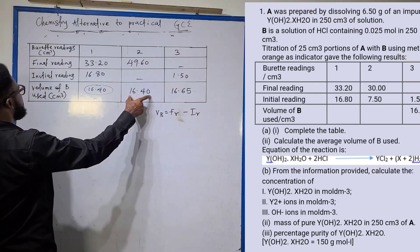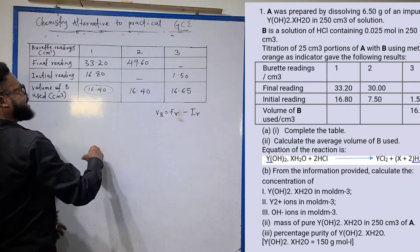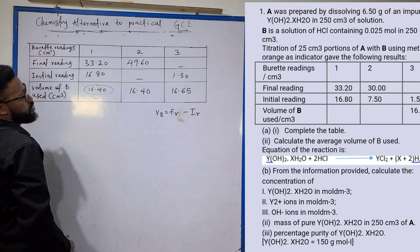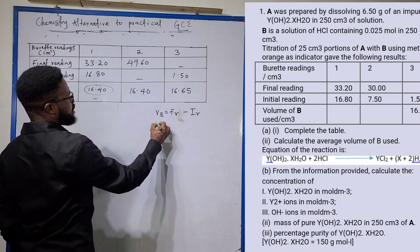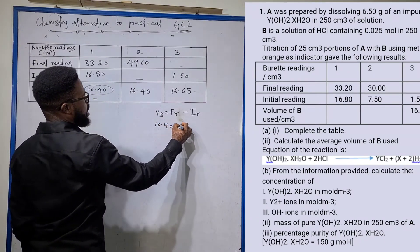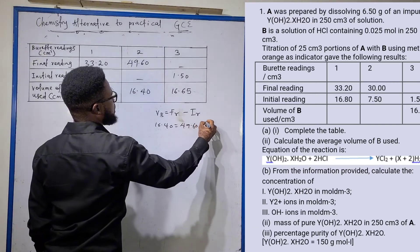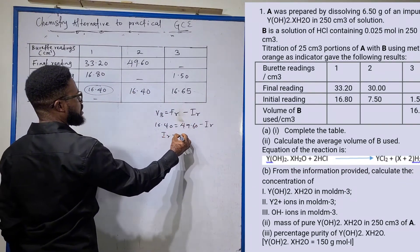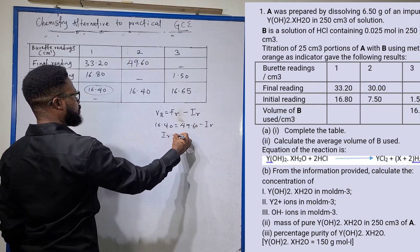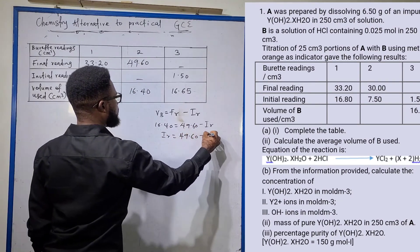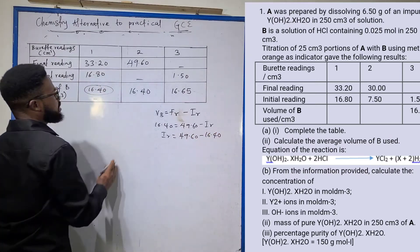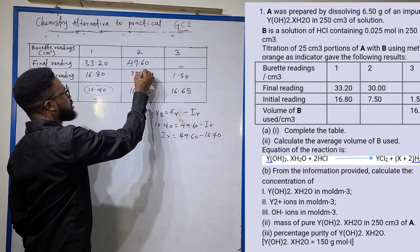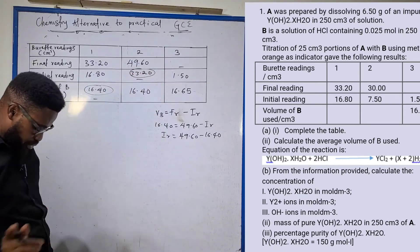For me to have 16.40 as the volume used, it must have been 49.60 minus something. The final reading was 49.60 and the initial reading is what we are looking for. So 49.60 minus 16.40 gives me 33.20 as the initial reading.